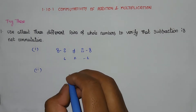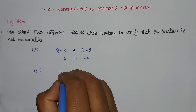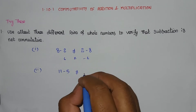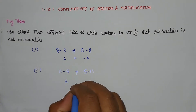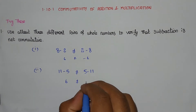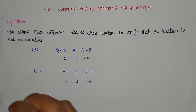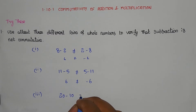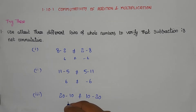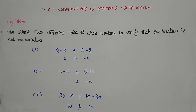Second example: 11 minus 5 is not equal to 5 minus 11. Third example: 20 minus 10 is not equal to 10 minus 20. 20 minus 10 gives 10, while 10 minus 20 gives minus 10. So this is also not equal. All three examples confirm subtraction is not commutative.